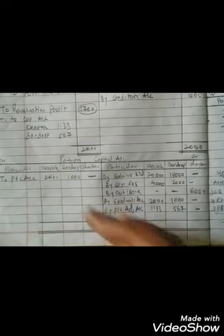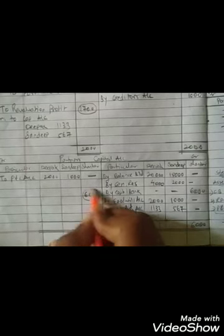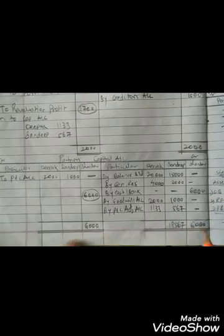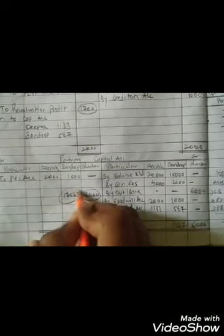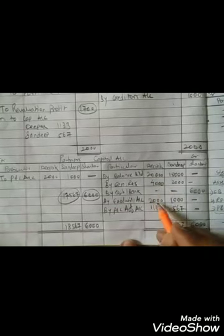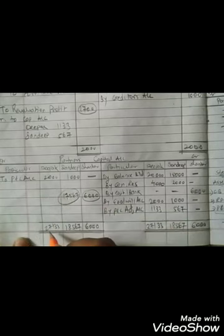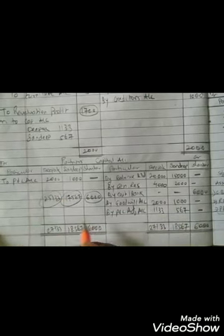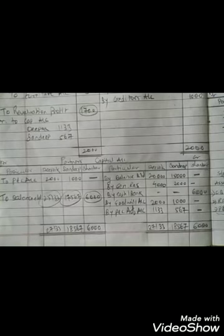Calculating Deepak's closing balance: Opening capital Rs.20,000 + General reserve Rs.4,000 + Goodwill Rs.2,000 + Revaluation profit Rs.1,133 − P&L debit Rs.2,000 = Rs.25,133. Sandeep's closing balance: Rs.15,000 + Rs.2,000 + Rs.1,000 + Rs.567 − Rs.1,000 = Rs.17,567. These are written as 'Balance c/d' on the debit side of each partner's capital account. Shankar's balance is simply his capital contribution: Rs.6,000.